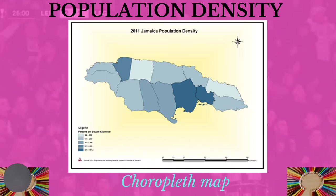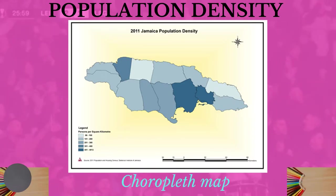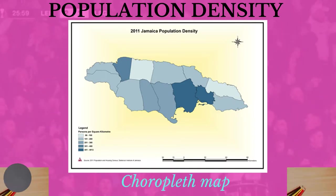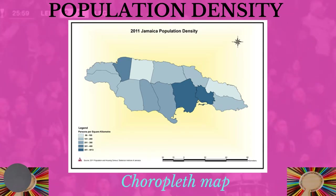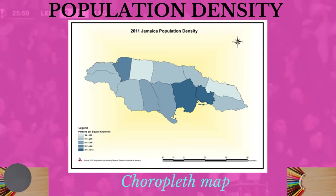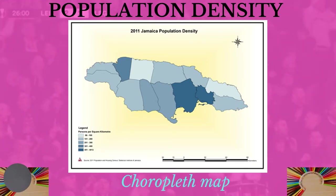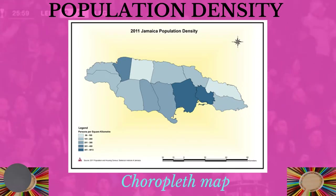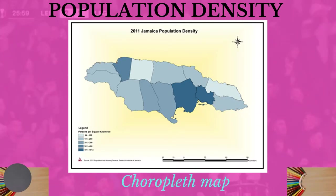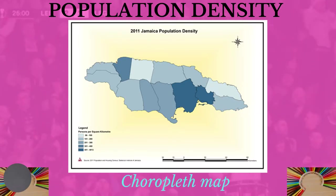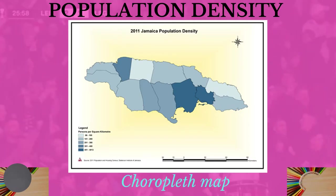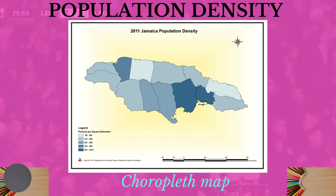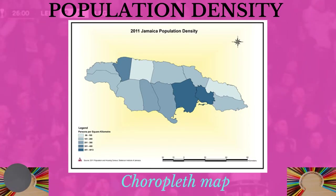Population density is a concentration of people in a particular area. We can define it as the number of persons per unit square, so it compares total population with land size.